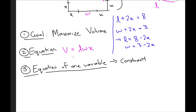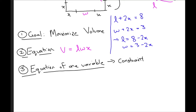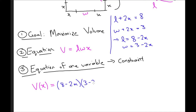Now we can substitute l and w into our volume equation to get an equation of just one variable. So we have V(x) = (8 − 2x)(3 − 2x) · x. We have an equation of one variable, which we got from that constraint.